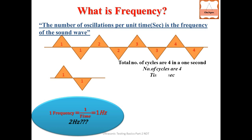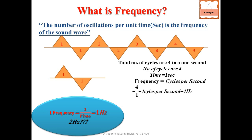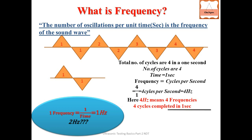Total number of cycles ke baare mein Part 1 mein full discussion hai. Yahan time one second hai, aur four cycles complete hue hain. Frequency is equal to cycles per second. One second mein four cycles hue, toh frequency = four hertz.